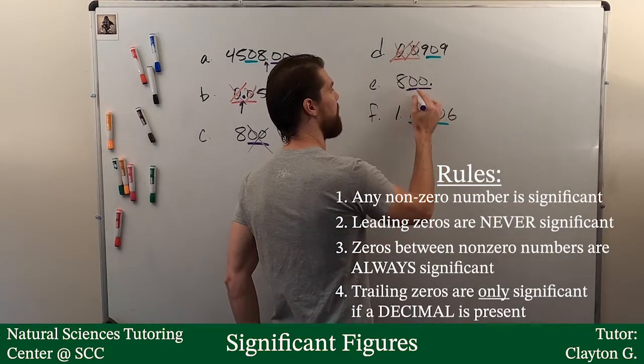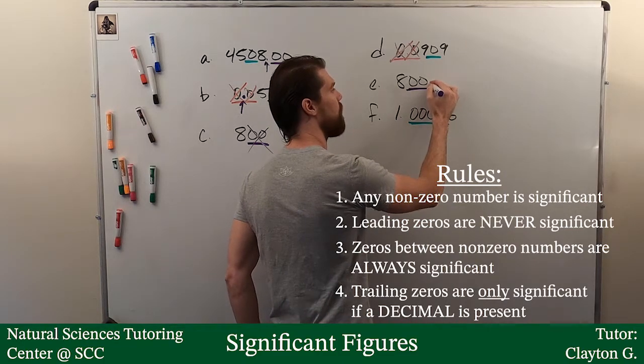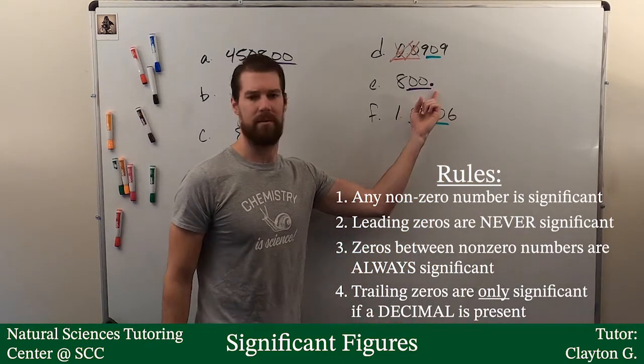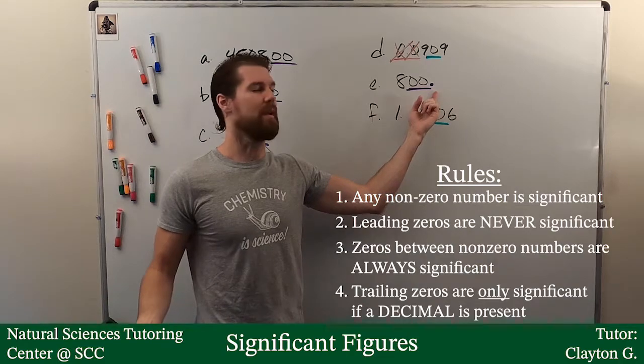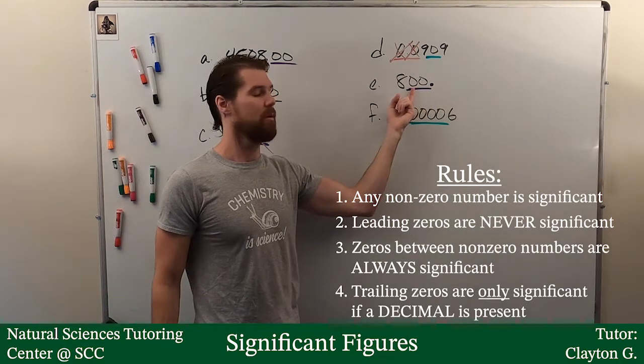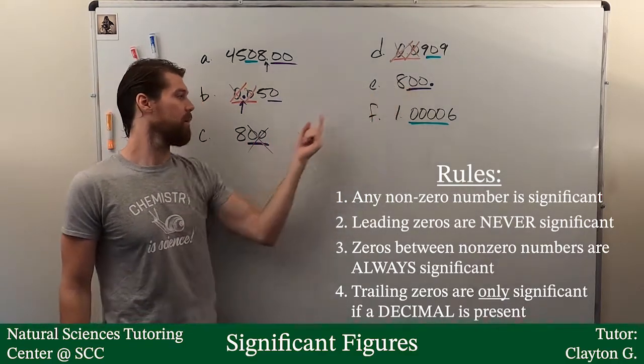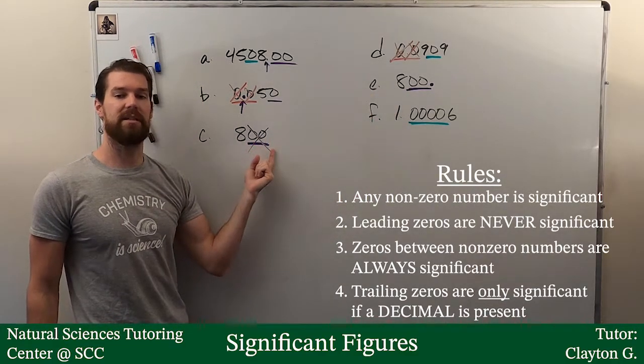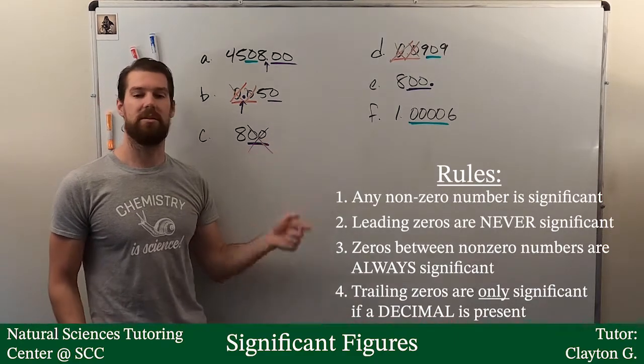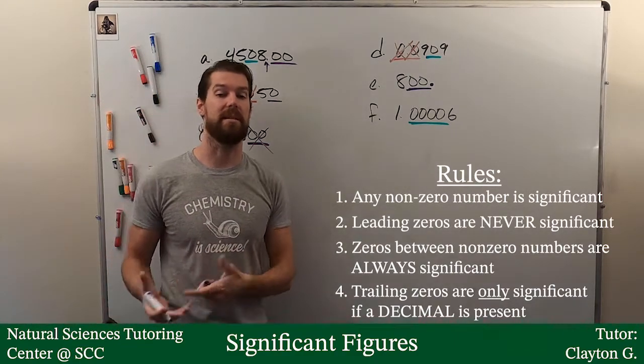Finally, we have these two right here. I have a decimal. It looks weird. It's at the end here. What does that mean? It just means that these two zeros are significant. Where if we compare this 800, they're both 800. But this 800 doesn't have a decimal in it. Therefore, these zeros are not significant. That's a big deal.